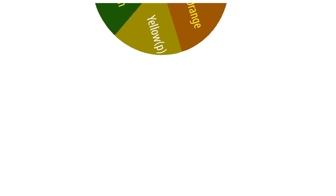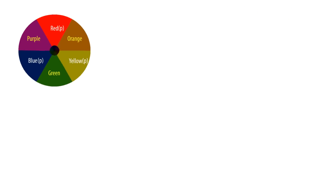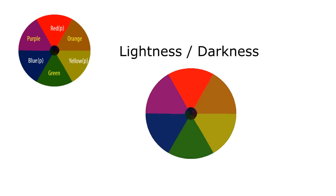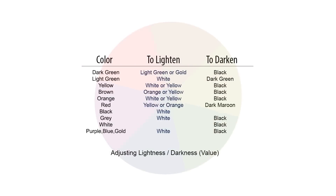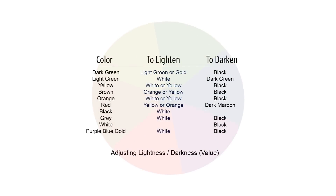Now color has three dimensions that we can adjust. There is the hue, which is the color itself; there's the lightness-darkness value; and there's another dimension known as chroma, which refers to the saturation or purity of the color — basically the color measured on a gray scale. The first adjustment you're going to want to make, if necessary, is going to be to the lightness-darkness of a color, also known as the value. And generally you can darken a color by adding black and lighten it by adding white, but that's not always the case.